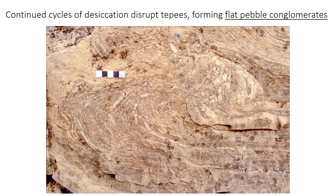This forms a deposit called a flat pebble conglomerate. As the name suggests, it's a bed composed of broken-up tabular pieces — generally quite long and thin, somewhat square and blocky — of the underlying unit. The name is somewhat inaccurate because the pieces are typically quite angular, so it should really be called a breccia, but the name flat pebble conglomerate is what's used.